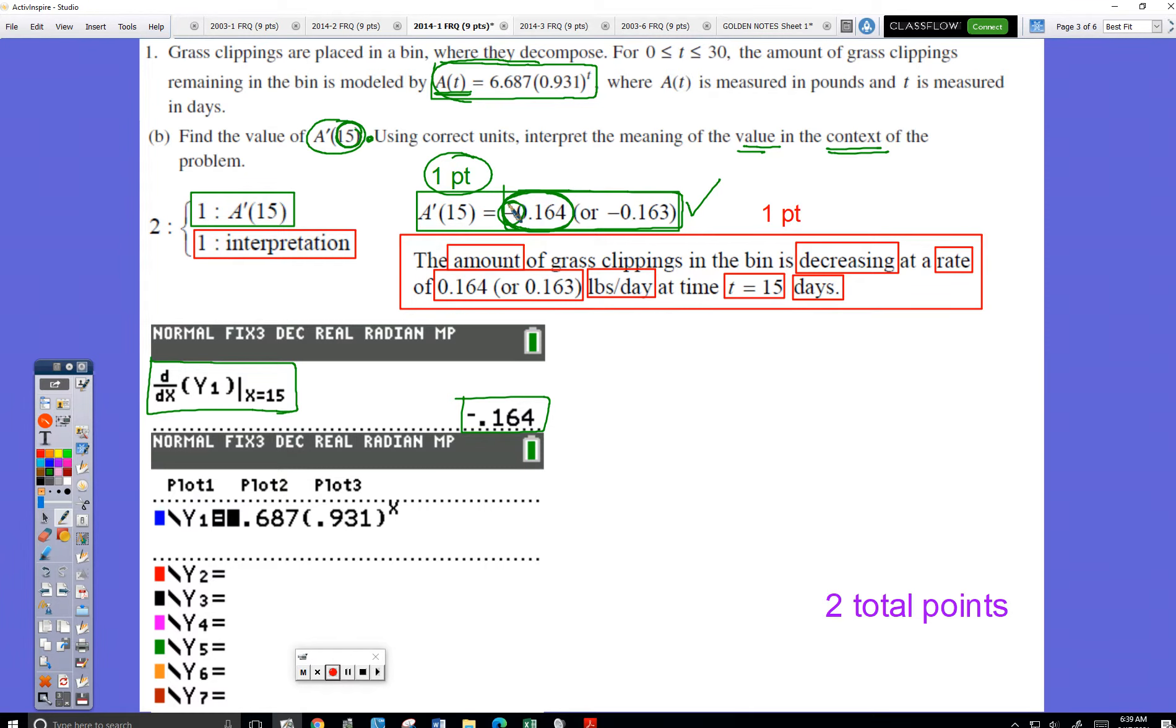So I wrote the amount. The keyword is to say amount. The amount of grass clippings in the bin is decreasing, decreasing the keyword. The number. Another keyword is rate. The number is key. Units are key. Pounds per day. And it's key to note that that's happening on day 15.